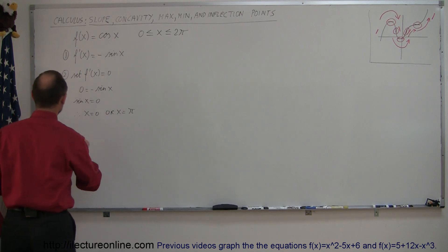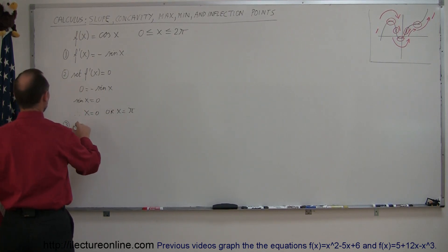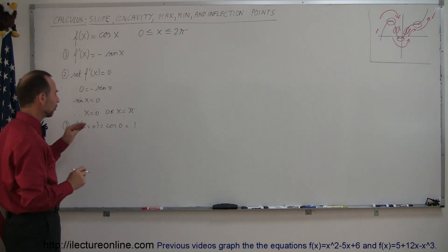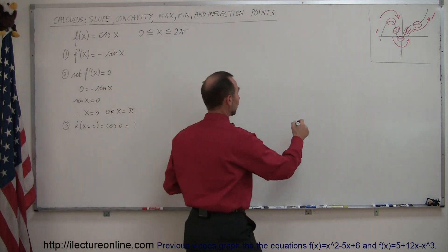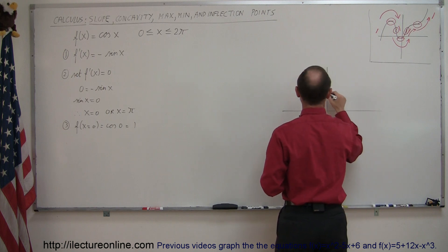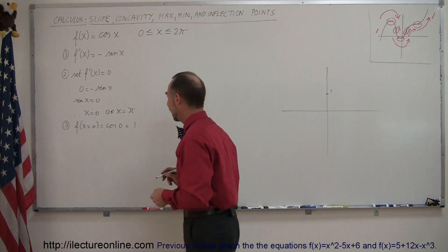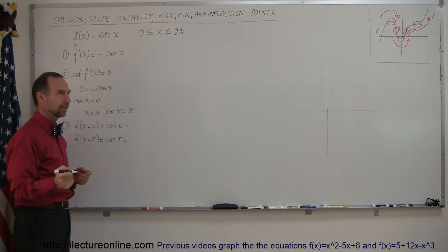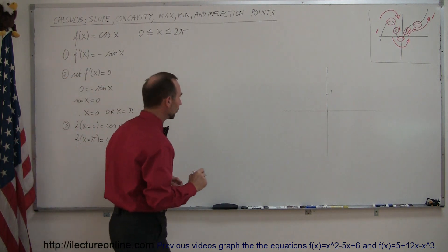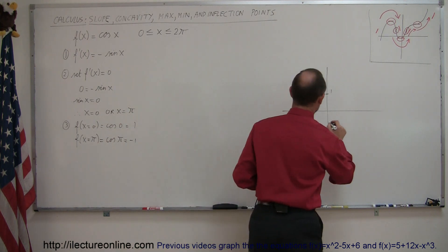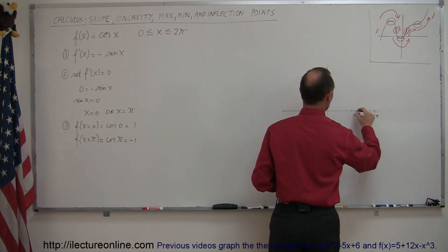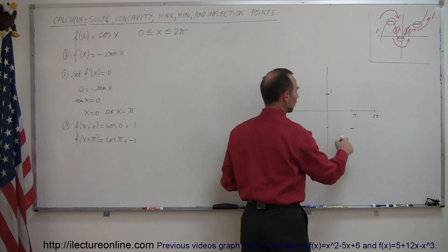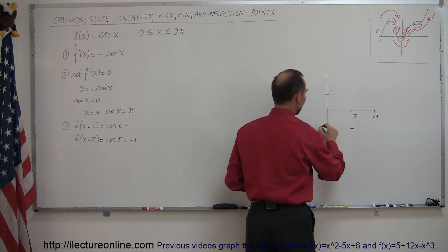To find the corresponding y values, we plug those values back into the original function. f(0) equals the cosine of 0, which is 1. So when x equals 0, y equals 1 — we can plot that on the graph. Then f(π) equals the cosine of π, which is negative 1. So when x equals π, y equals negative 1, and the slope is 0 at both of those points.